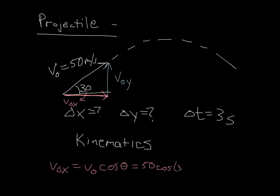I have v₀ is 50 times the cosine of 30. So that's going to give me a v₀ₓ that's equal to 43.